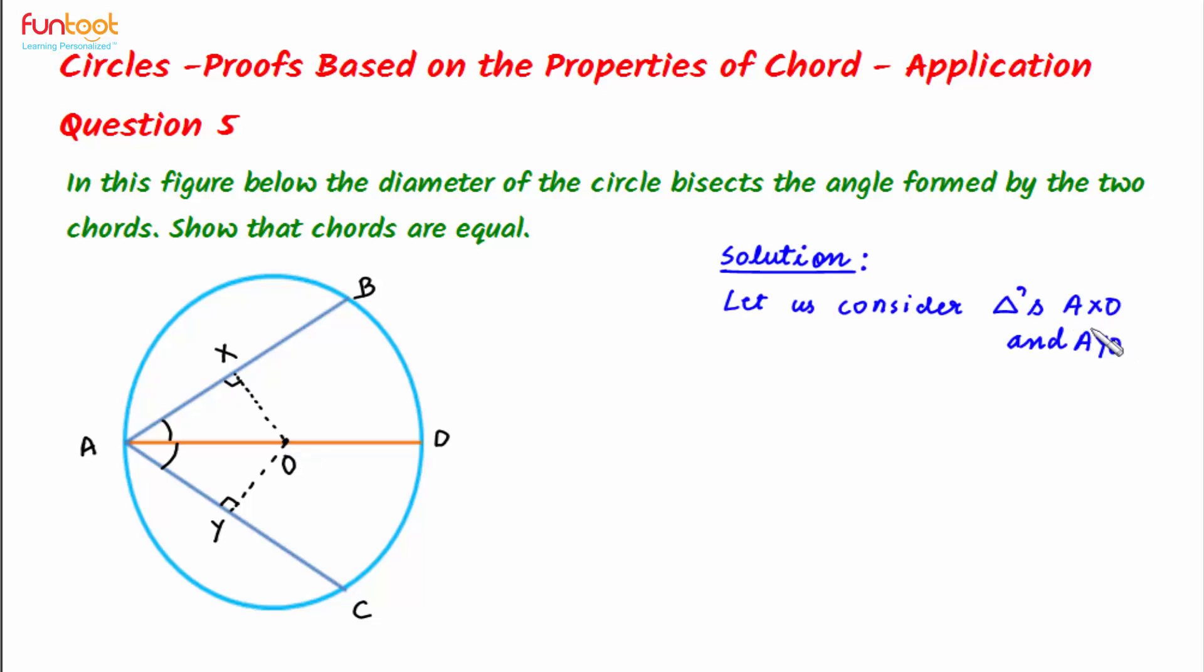So let us consider triangles AXO and AYO. In these triangles, AO is common, angle XAO is equal to angle YAO given in the question, and angle OXA is equal to angle OYA equal to 90 degrees.